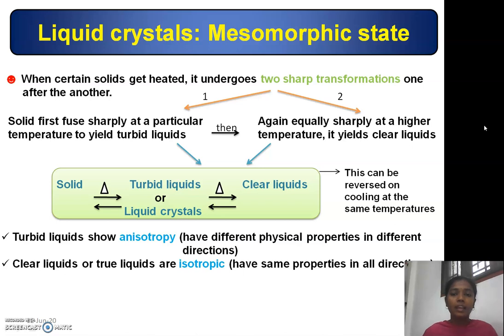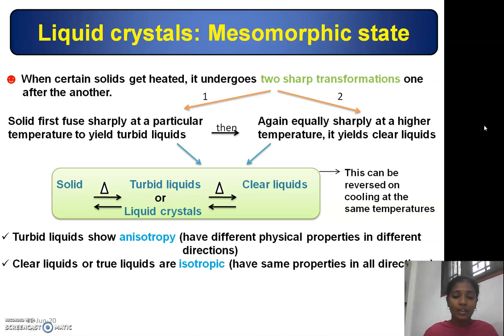Then, again equally sharply at a higher temperature, liquid crystals yield pure liquids. This process can be reversed on cooling at the same temperatures. Clear liquids show isotropic properties, whereas liquid crystals show anisotropic properties — meaning they have different physical properties in different directions.